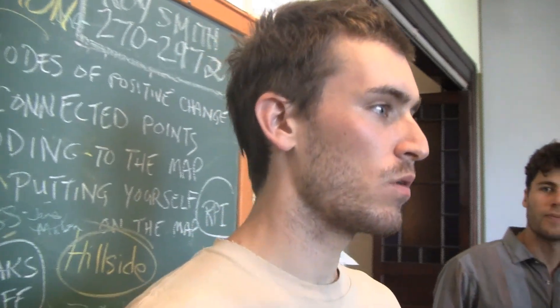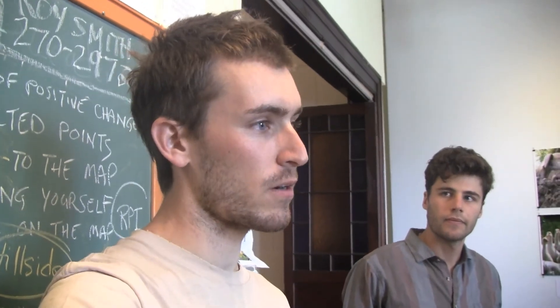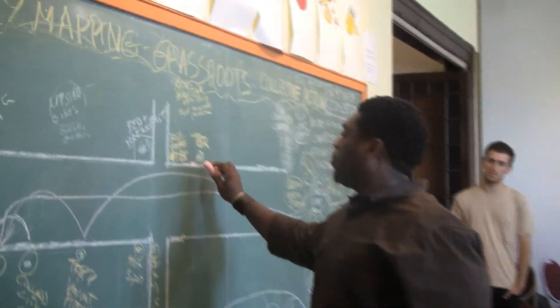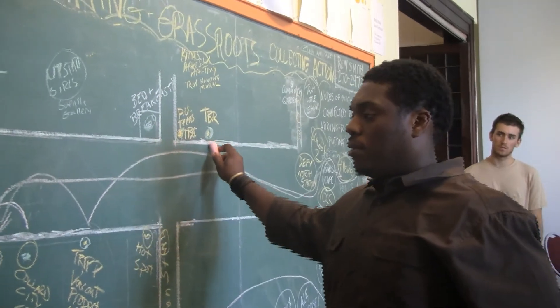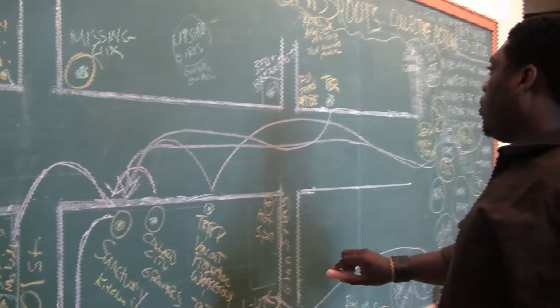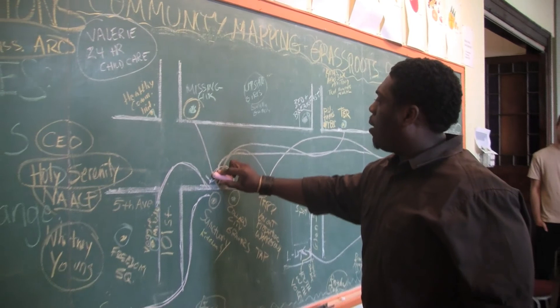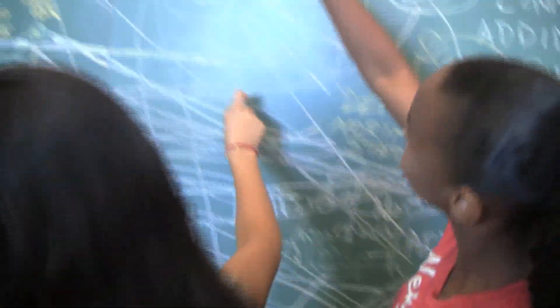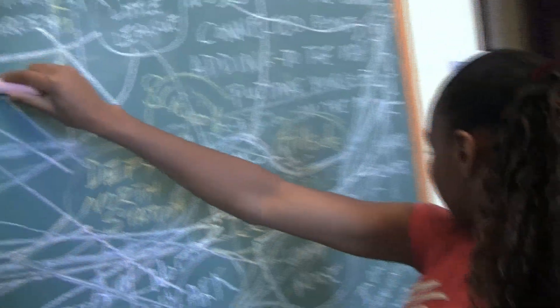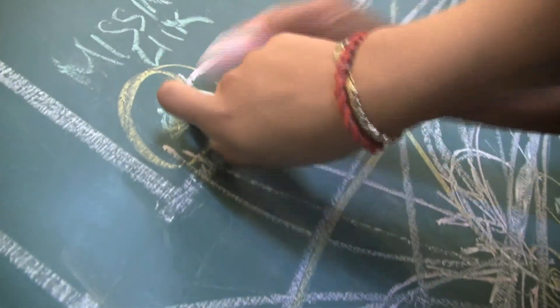At the end of the workshop, we'll end up with kind of a layer — an extra layer — that we can put down on top of this neighborhood and start to understand it in a new way. I'll connect TBR with the sanctuary because I've worked with kids at both spots, as well as the missing link. I'll connect it to the sanctuary. Where's the ark at? To the ark. I'll connect him.